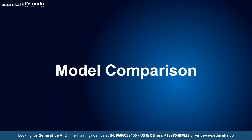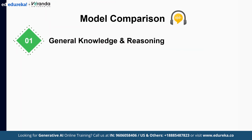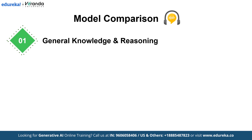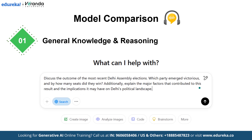Moving on to the model comparisons. First, we are going to try general knowledge and reasoning. Our first prompt focuses on Indian politics. We will ask each model to analyze the outcome of the most recent Delhi Assembly elections. The prompt is: discuss the outcome of the most recent Delhi Assembly elections — which party emerged victorious and by how many seats did they win? Additionally, explain the major factors that contributed to this result and the implications it may have on Delhi's political landscape. This question tests the model's understanding of current events and their ability to analyze complex political scenarios.